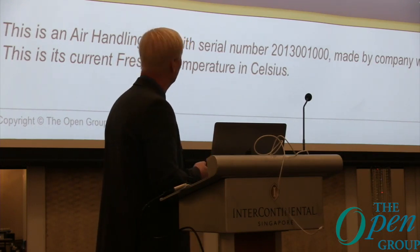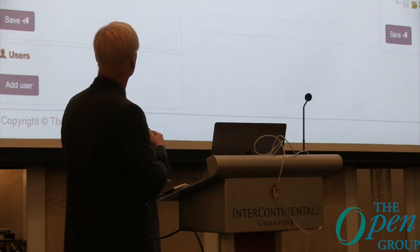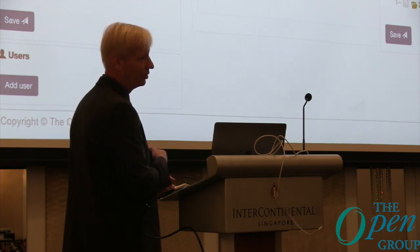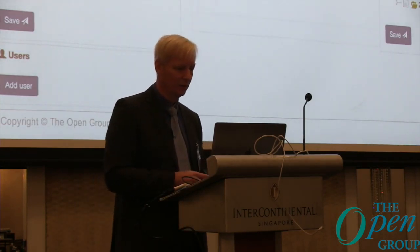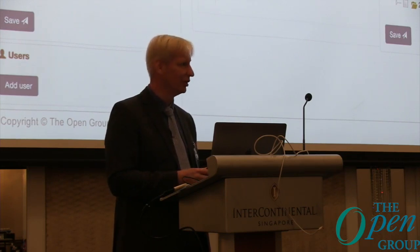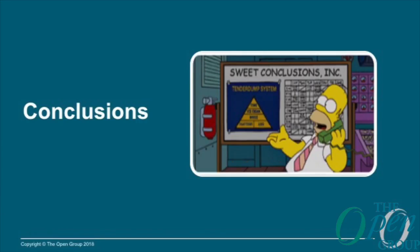For fine-grained access control — everyone has some background in file systems, so you know how access rules are specified in Unix systems. Once you have a hierarchical structure as in ODF, you can apply similar rules: specifying exactly which users have what kind of access to what pieces of information — what objects, all the information under them, or even actuation rights. This is something we have been working on heavily this year and it is used in all the Biotope use cases.